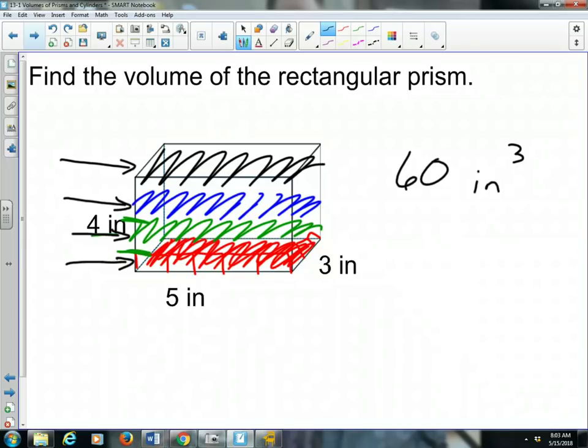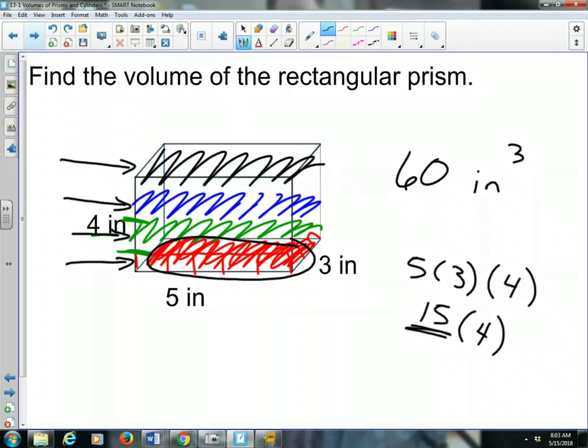And the way we get that, we take five times three times four to get 60. But our definition, our formula that we're going to use is it's the area of the base. The base is a rectangle, so it's five times three. It's the area of the base multiplied by the height. And the height is four. So again, we took 15, that was the area of the base, and we took that four inches high. And 15 times four gets right back to our 60 inches cubed.